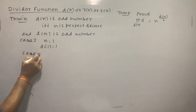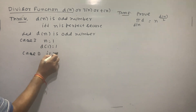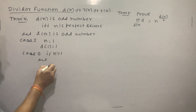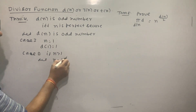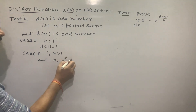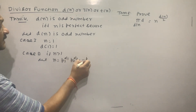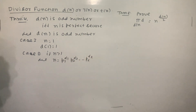Case 2: if n is greater than 1, let n equal to p₁^α₁ · p₂^α₂ · ... · pᵣ^αᵣ, where the pᵢ are distinct primes.